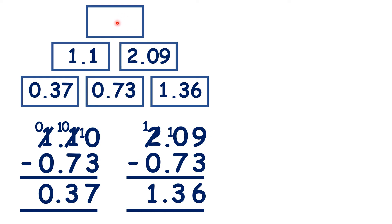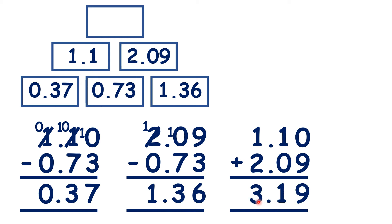And how can we find our top brick? We need to add the 2 bricks below. So there's our 0 in the empty place value column, the decimal point in our answer. And so that gives us 3.19.